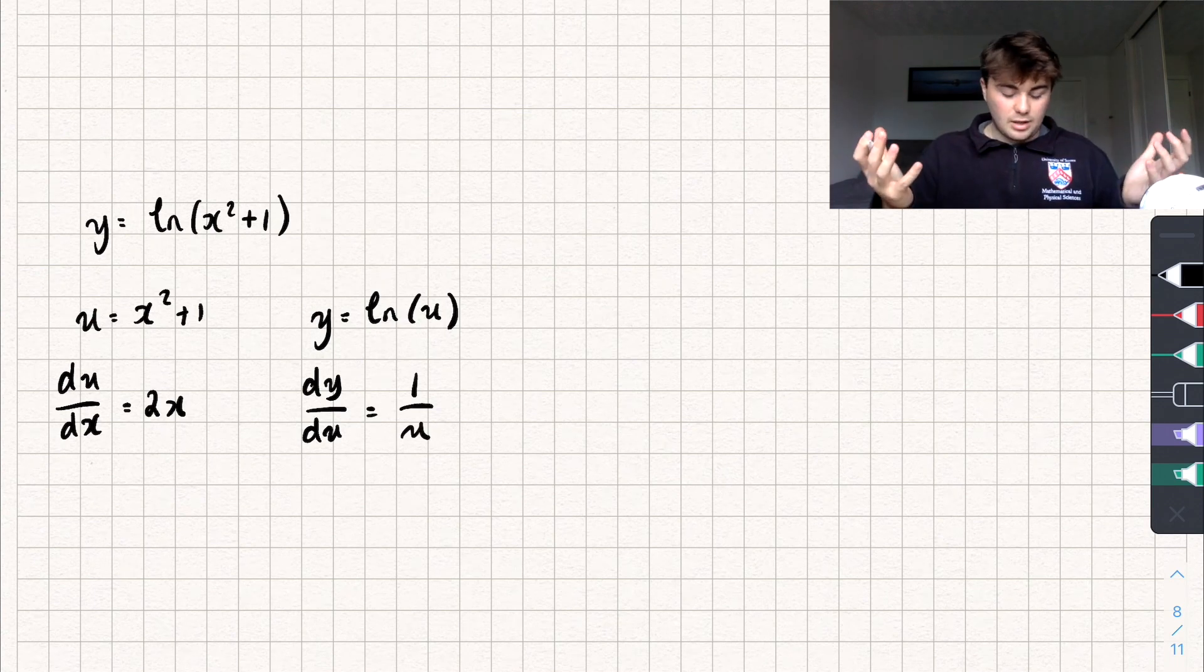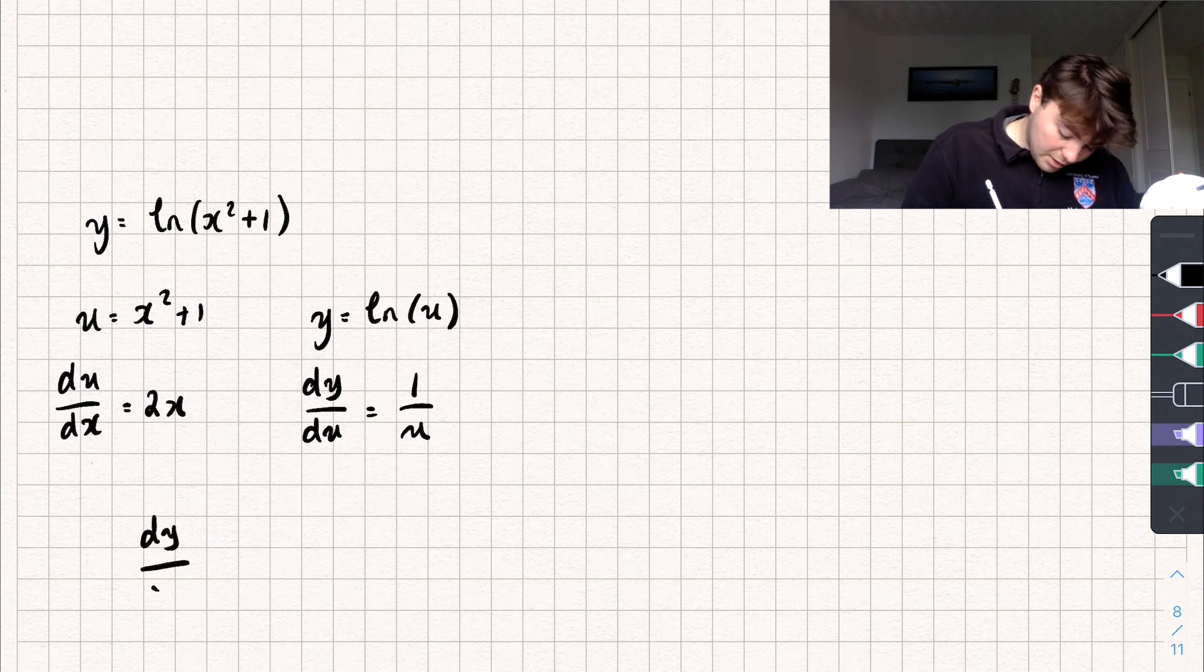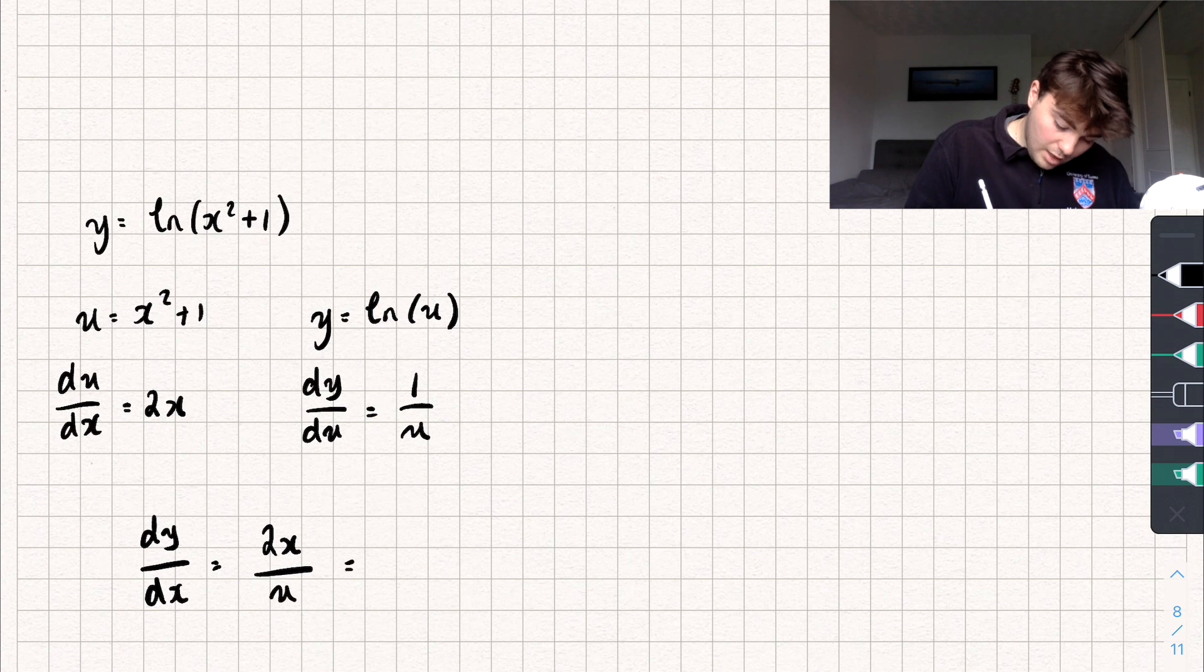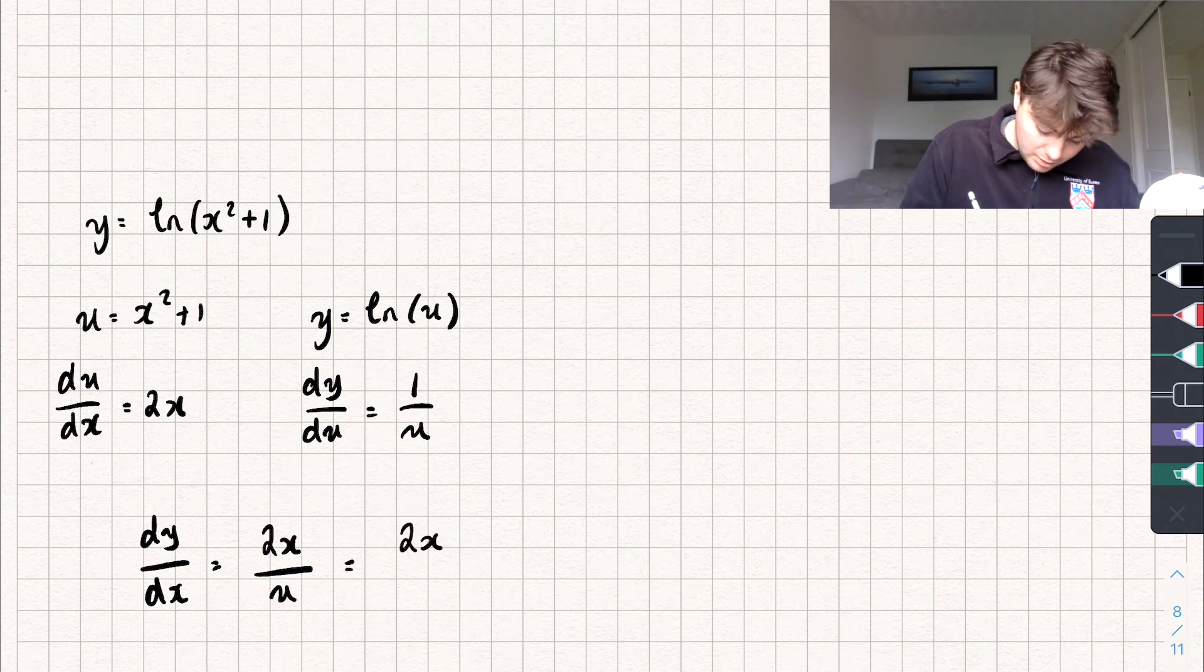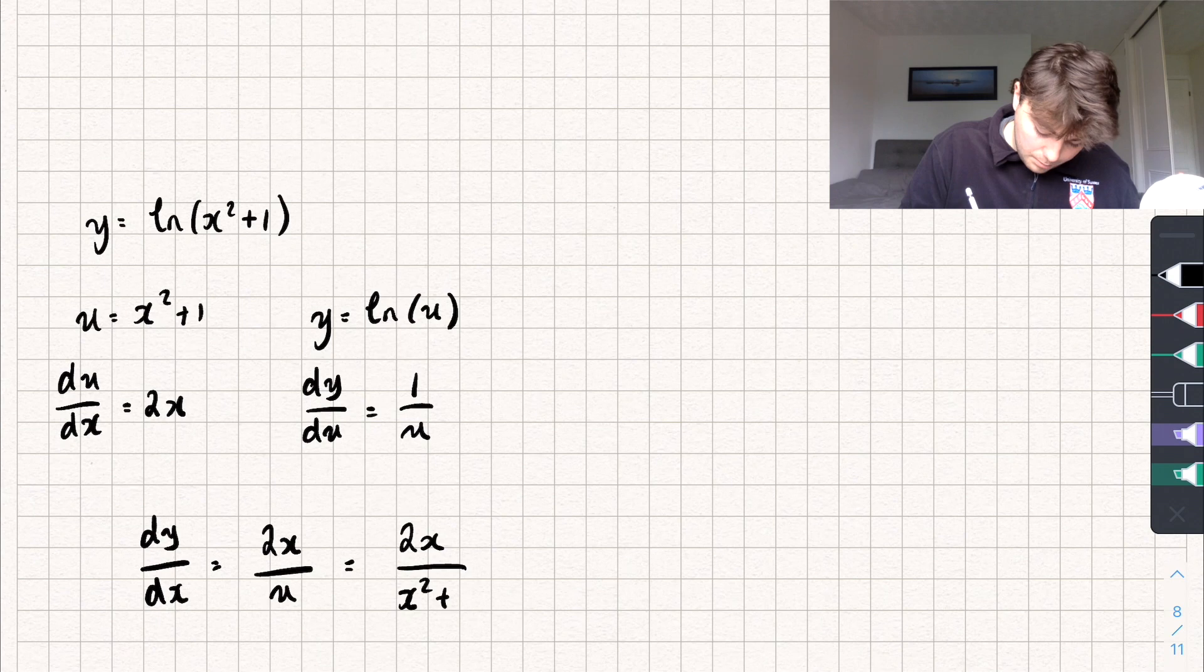So to find the derivative dy by dx I'm going to multiply these two things together. So we get 2x over u. And u is equal to x squared plus 1. So we get the answer 2x over x squared plus 1.